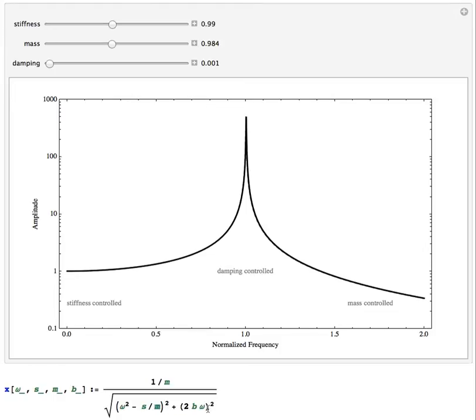And I want to explore how this response depends on mass, stiffness, and damping. The mass shows up in two places. The stiffness shows up once. The damping shows up once, and I've created an animation here that allows me to change the values of those numbers to see what happens.